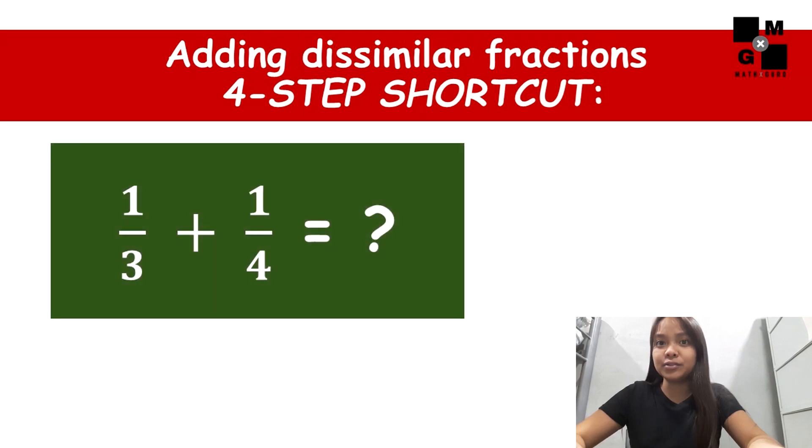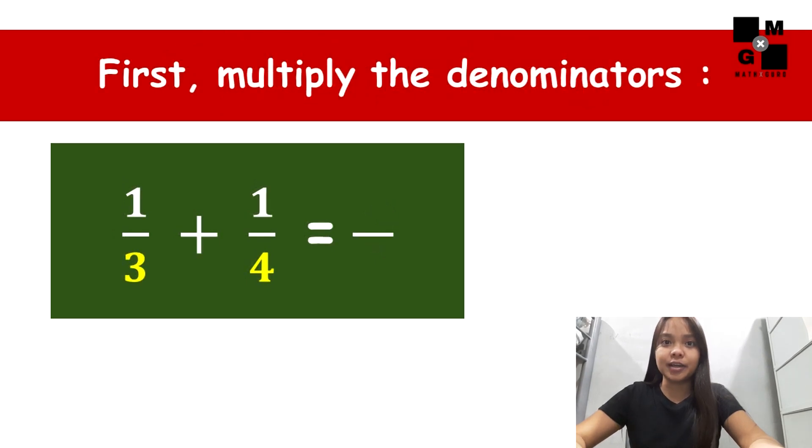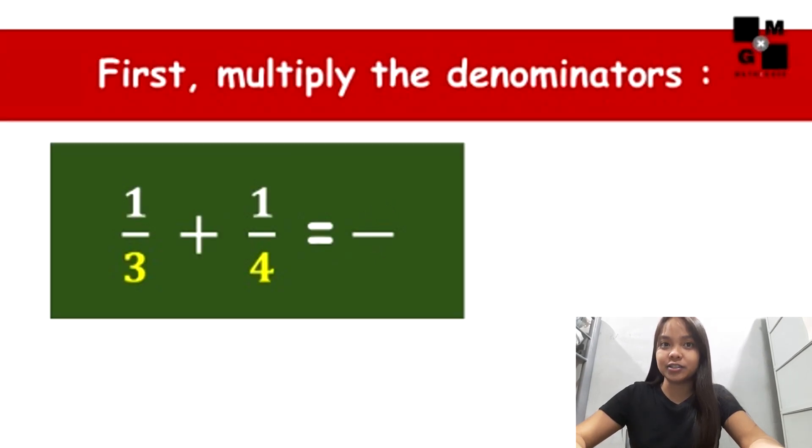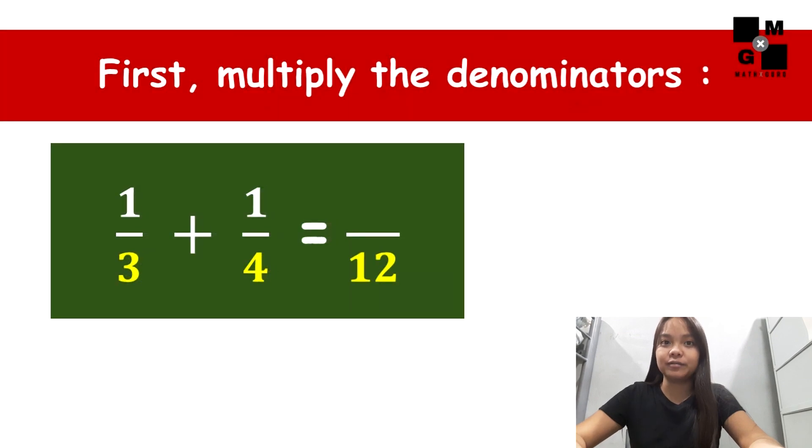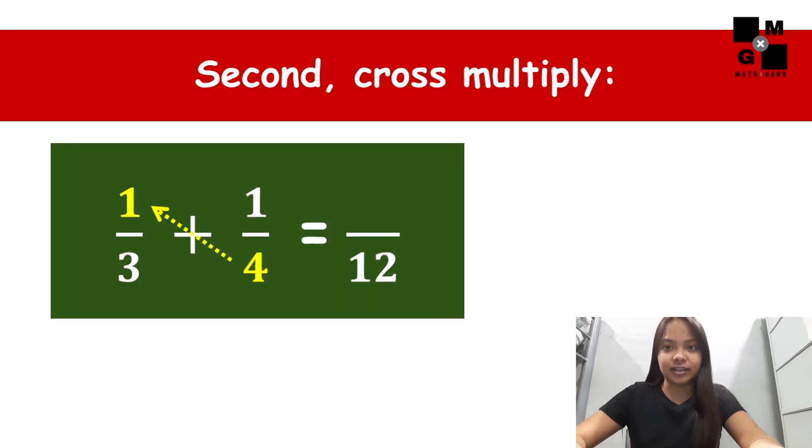Let me demonstrate it to you using this example. What is the sum of one-third and one-fourth? The first step is to multiply the denominators. Three times four is twelve. Then after that, proceed to the second step.